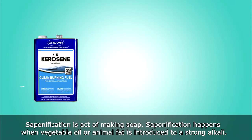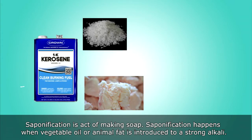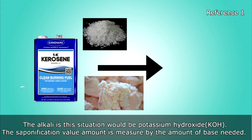Saponification is the act of making soap. Saponification happens when vegetable oil or animal fat is introduced to a strong alkali. The alkali in this situation would be potassium hydroxide (KOH). The saponification value amount is measured by the amount of base needed.